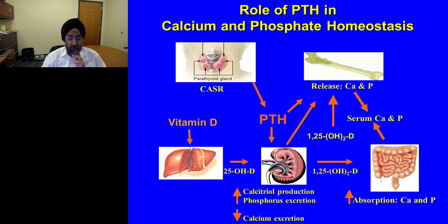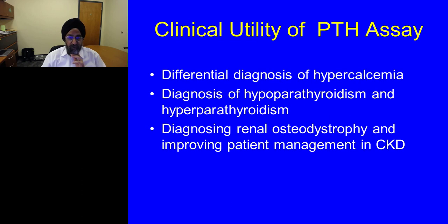The next slide shows the complexity of the vitamin D–PTH endocrine system, with parathyroid hormone at the center of the diagram — critical for maintaining calcium and forming active vitamin D. The clinical utility of PTH testing includes differential diagnosis of hypercalcemia, diagnosis of hypoparathyroidism and hyperparathyroidism (both primary and secondary), and diagnosing renal osteodystrophy and improving patient management in chronic kidney disease patients.